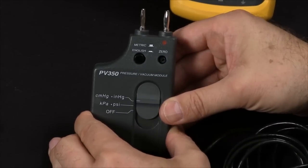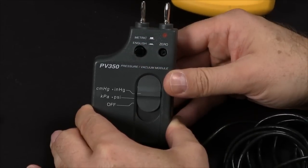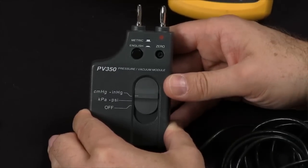To change from English to metric, you simply press this button on top. When it is extended, you are measuring in metric, and when it is depressed, you are measuring in English parameters.